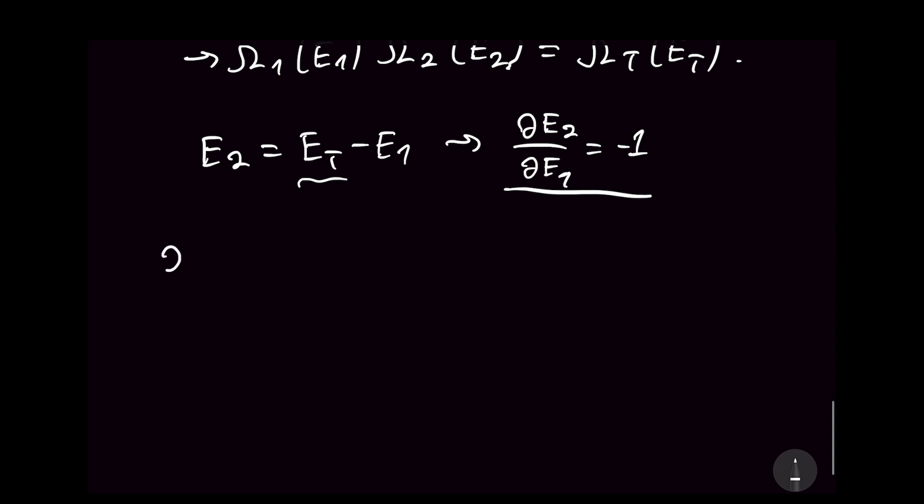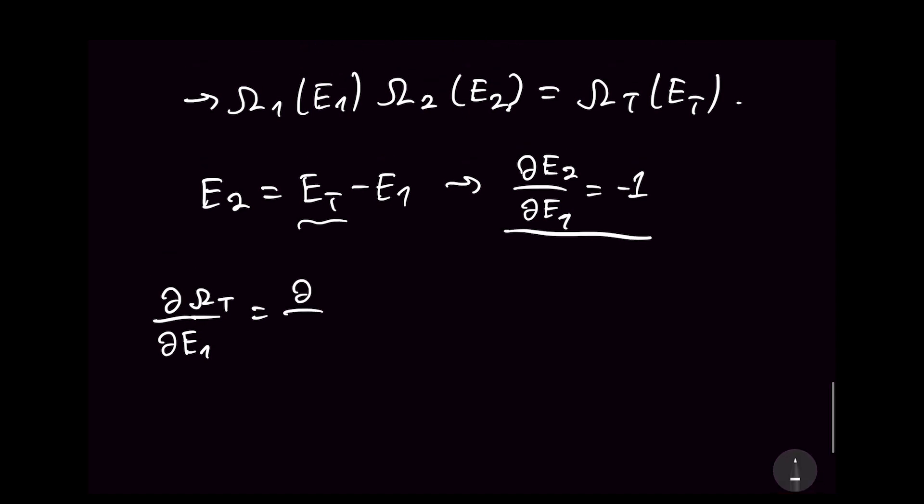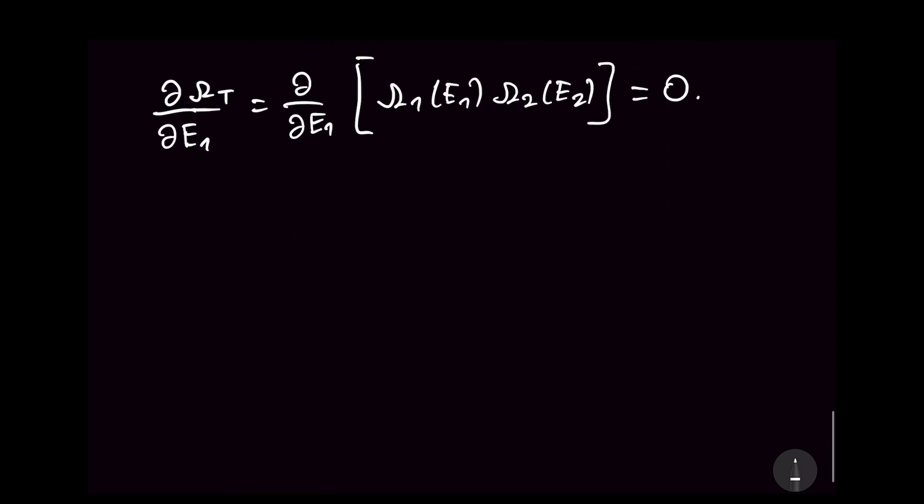If I do that, then omega_total up here, this is just derivative with respect to E1 for omega_1 of E1 and omega_2 of E2. First, we need to use a product rule. Let's just also set this to zero while we're here. If we use a product rule, we would get ∂omega_1/∂E1 times omega_2 plus omega_1 times ∂omega_2/∂E1 equals 0.